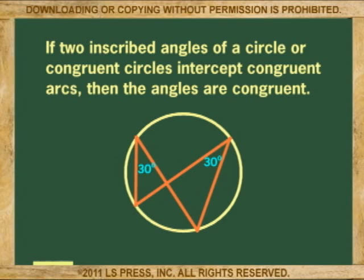If two inscribed angles of a circle or congruent circles intercept congruent arcs, then the angles are congruent.